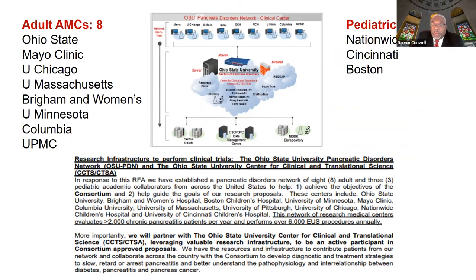They assembled a consortium within the consortium — calling friends around the country, engaging eight academic medical centers including Ohio State, Mayo Clinic, University of Chicago, Massachusetts General/Brigham and Women's, University of Minnesota, Columbia, UPMC, and also three pediatric centers including Cincinnati and Boston. This network evaluates over 2,000 chronic pancreatitis patients per year and performs over 6,000 EUS procedures per year, supporting a strong application for recruitment.